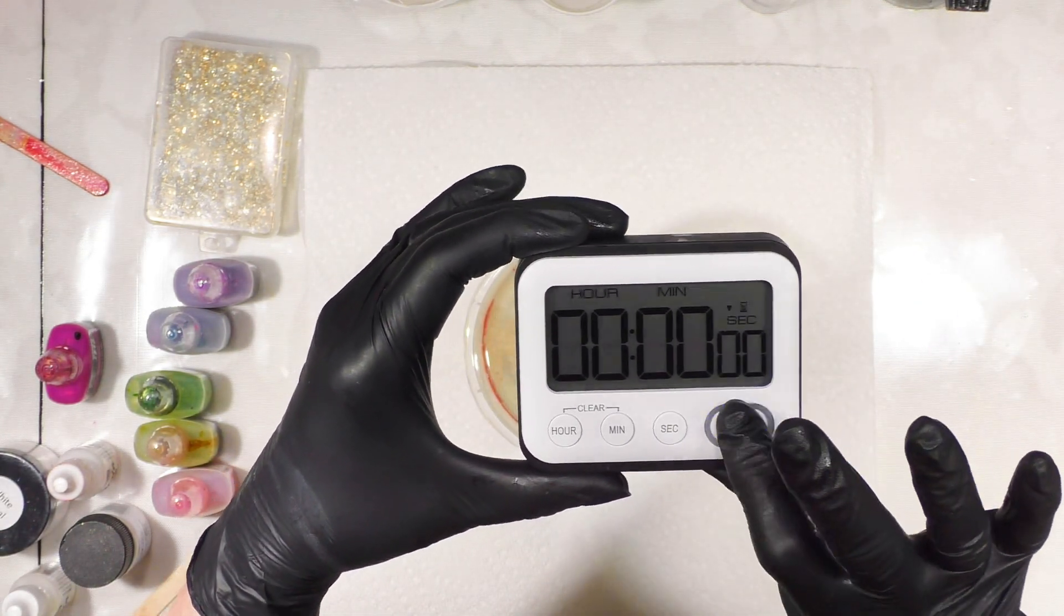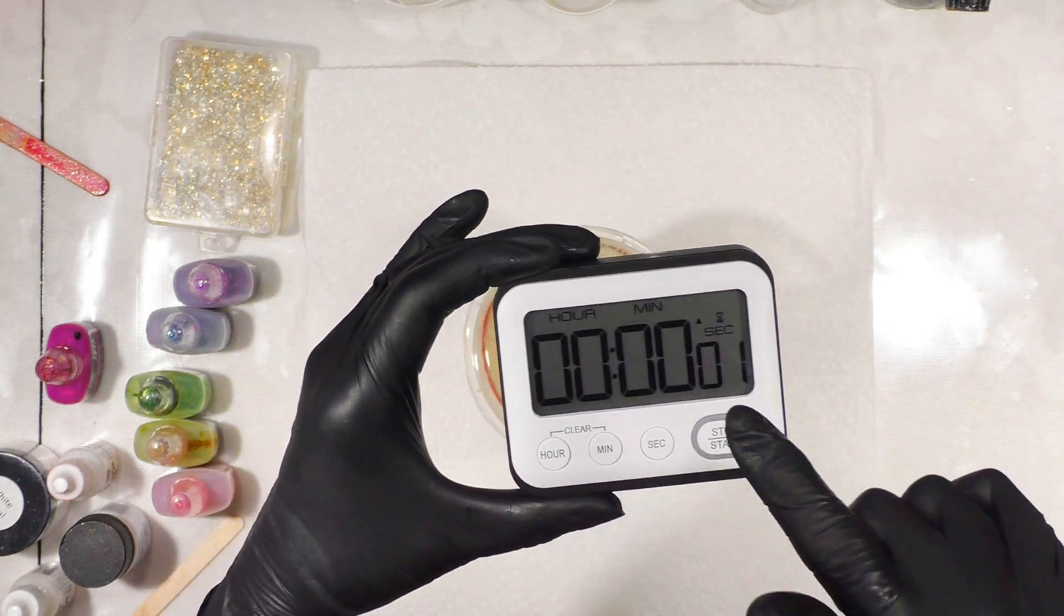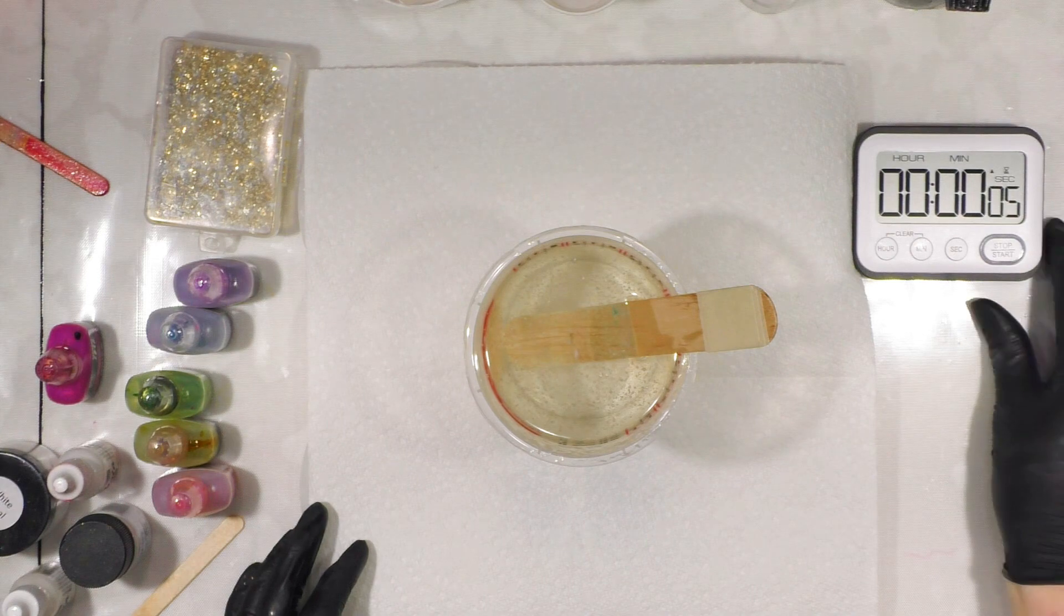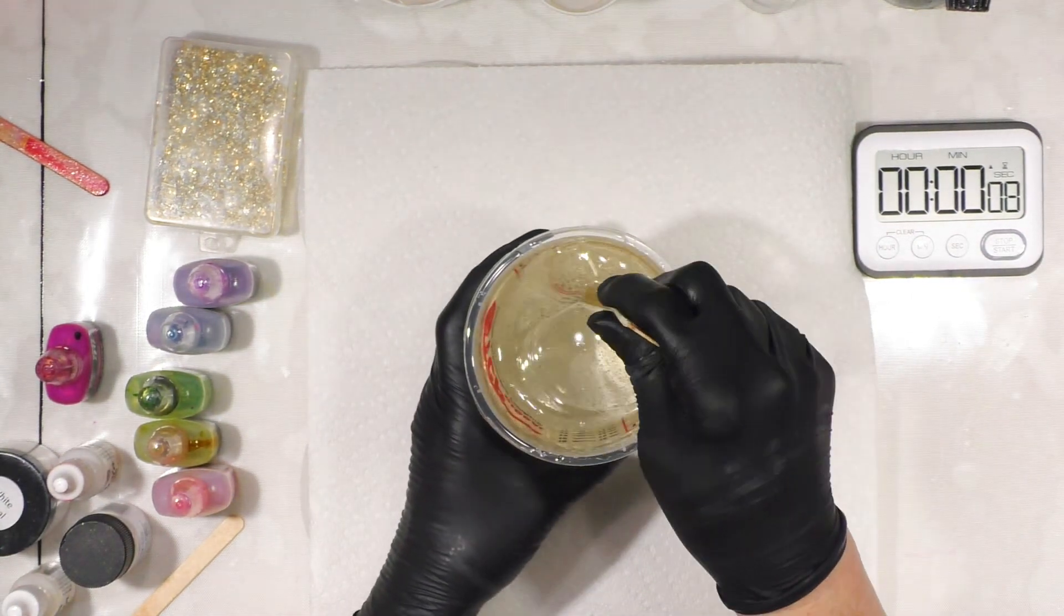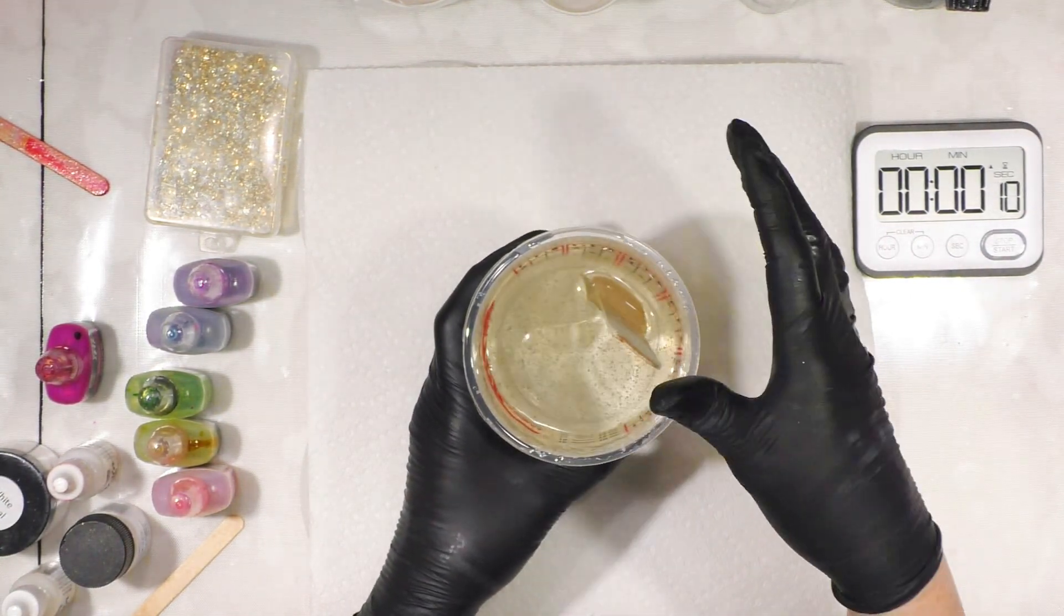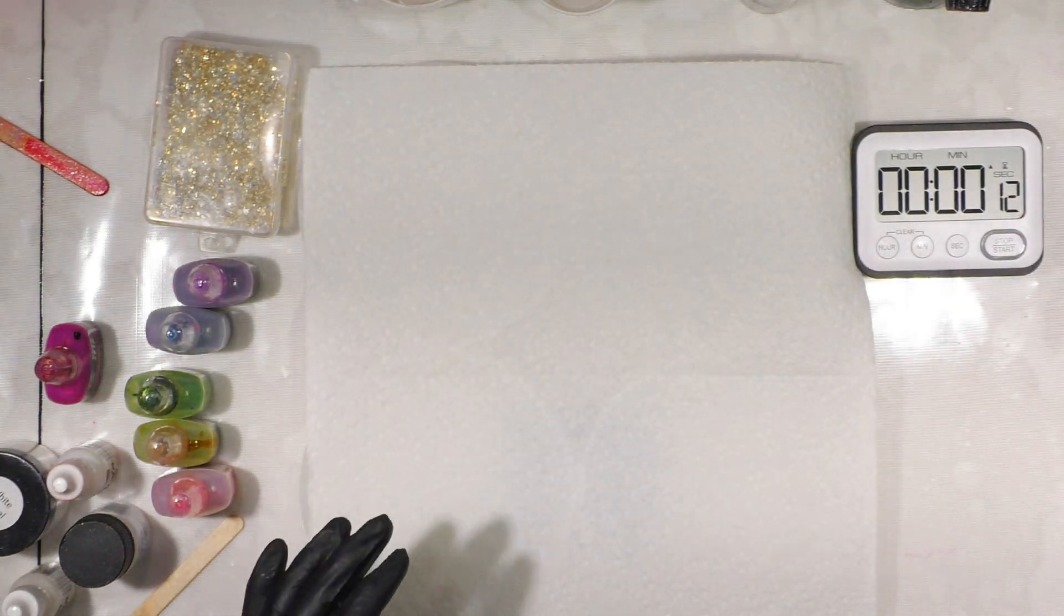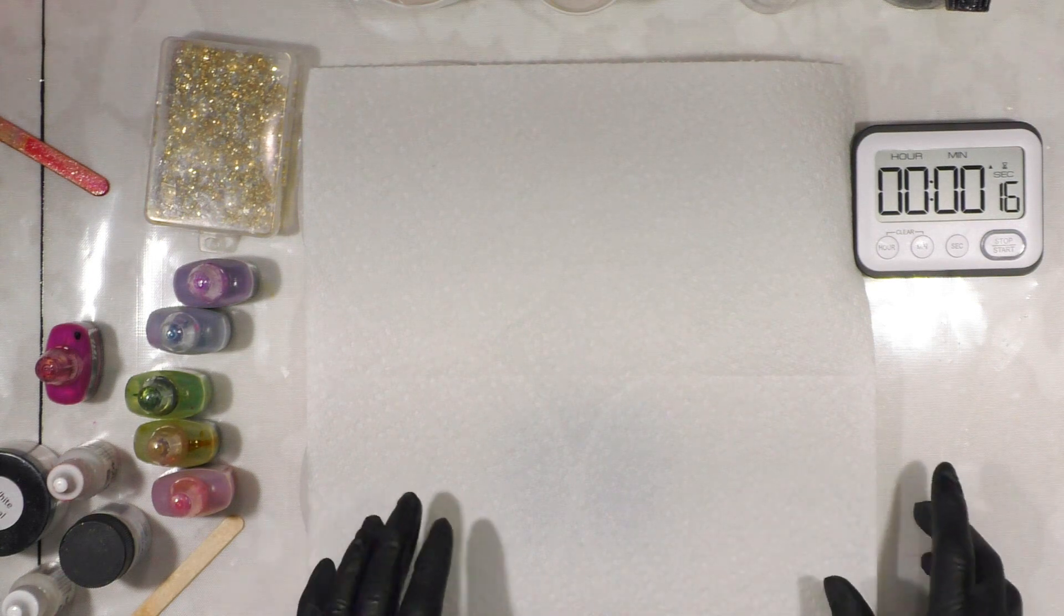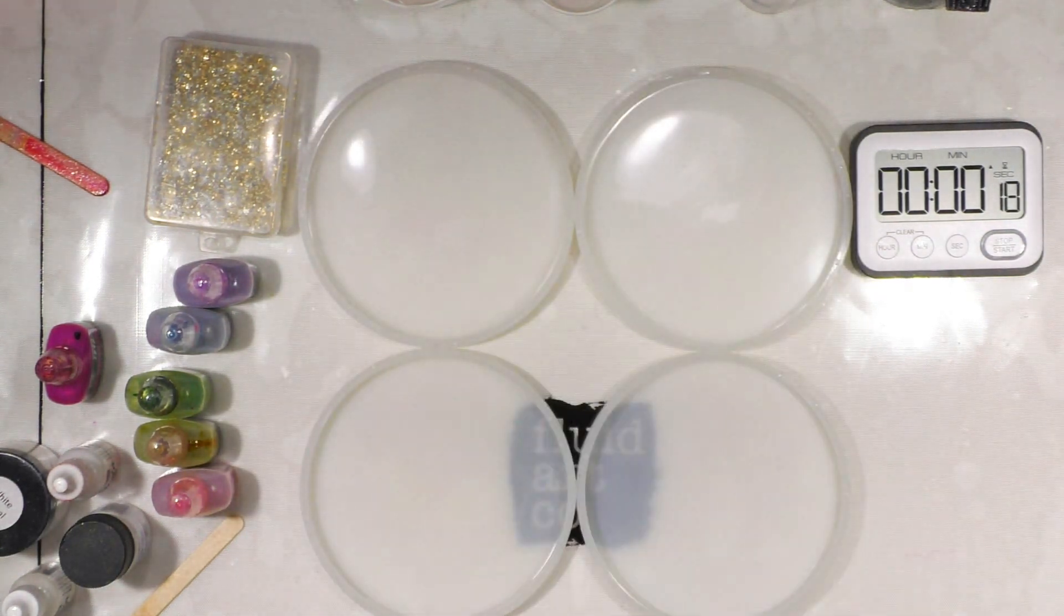I'm going to hit start and we are going to keep an eye on our time. I'm going to put this right here so you can see the time as I'm working and I'm going to set this aside until about 10 to 15 minutes and then we'll come back and mix the white, put the rest of the resin into these coasters.